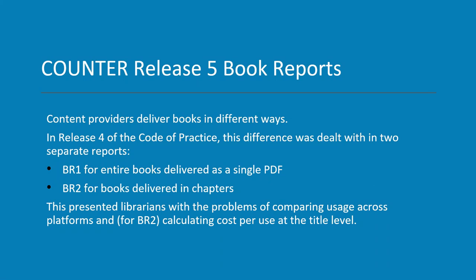The first problem was these two types of reports made it quite difficult — indeed impossible — for librarians to compare usage across different platforms. And for the BR2 report, there was a further difficulty in that librarians, because they buy books at the title level, want to calculate cost per use at the title level, and they were unable to do so. The new metrics developed for Release 5 address both of those problems.